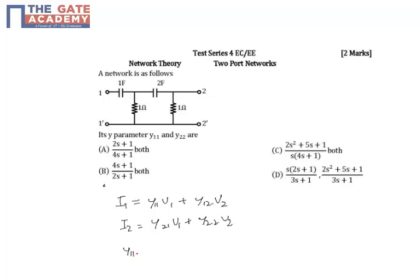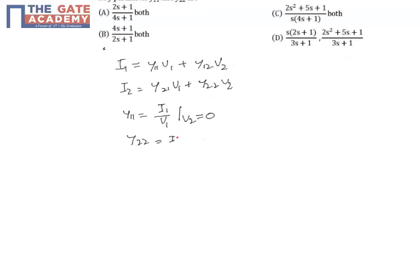where y11 equals i1 by v1 when v2 equals 0, that is, when the output is short-circuited. Similarly, y22 equals i2 by v2 when v1 equals 0.